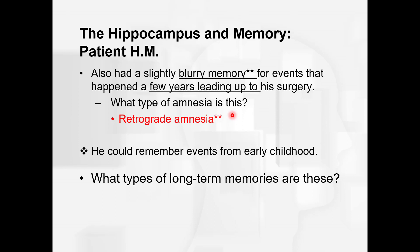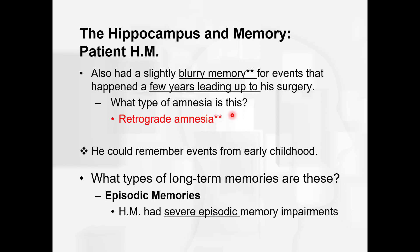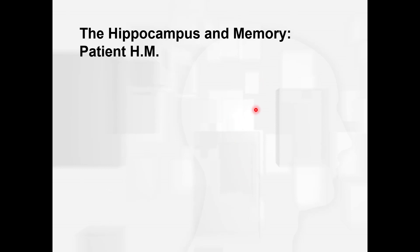Now what types of memories are these? The memory of riding a bicycle and having an accident, memories about things that happened in the house he grew up in — these all sound like episodes from his life, so they are episodic memories. Overall, HM had severe episodic memory impairments. He couldn't form any new personal recollections after the brain damage — complete anterograde amnesia — and only partial retrograde amnesia.